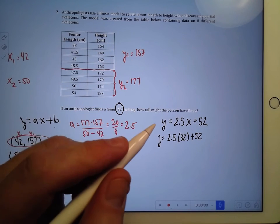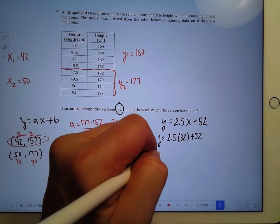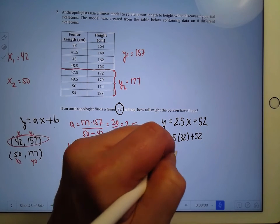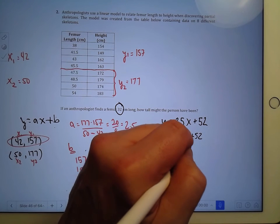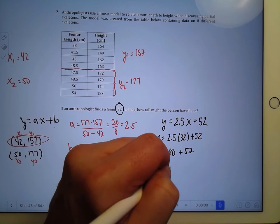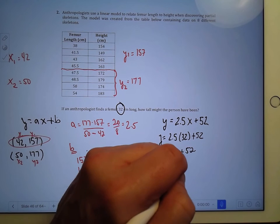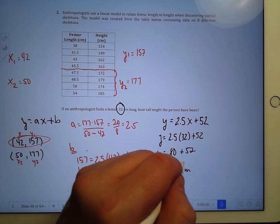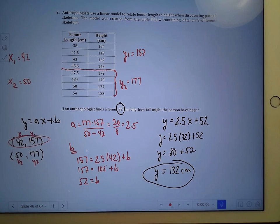So y is equal to 2.5 times 32 plus 52. When you do that, you're going to get y is equal to 80 plus 52, which is y equals 132 centimeters. And that's your answer.